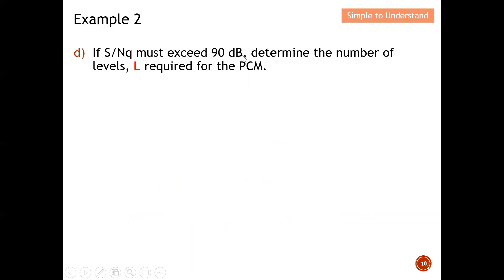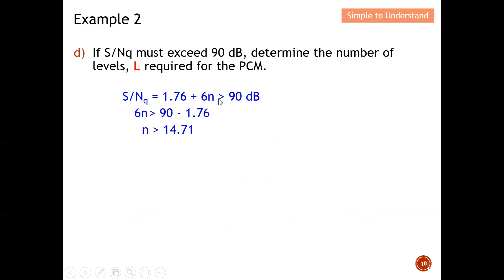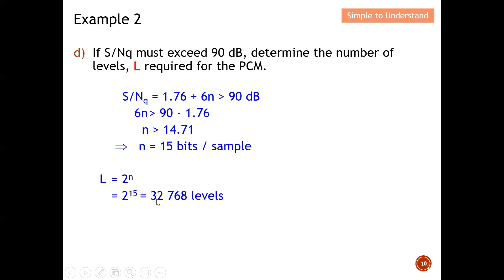If the signal-to-noise ratio must exceed 90 dB, determine the number of levels L required. Using S/N = 6N + 1.76 ≥ 90 dB, rearranging gives N = (90 − 1.76) / 6 = 14.71. Rounding up, N = 15 bits per sample. The number of levels is then L = 2 to the power 15 = 32,768 levels.